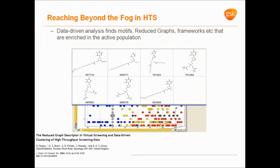You can even use reduced graphs to mine high-throughput screening data. They're very effective at pulling together groups of molecules whose 2D graphs are quite different, such that fingerprint methods would often not bring them together in a cluster — the reduced graphs fish them out quite naturally.